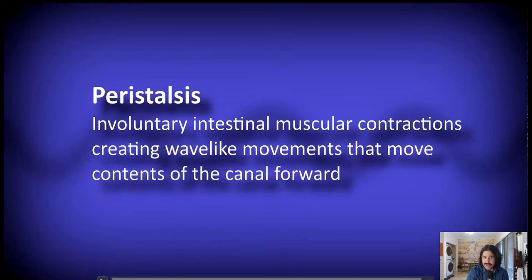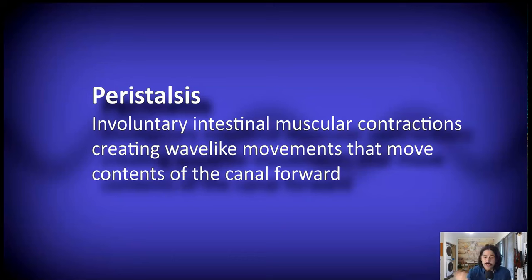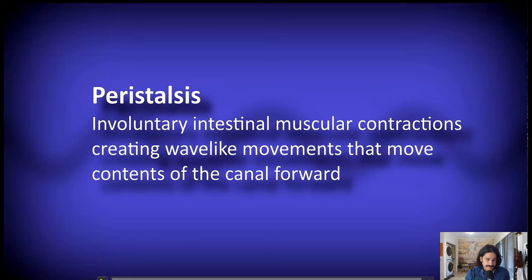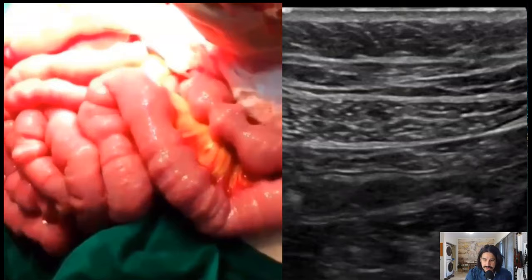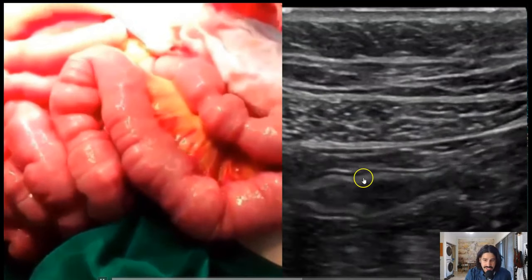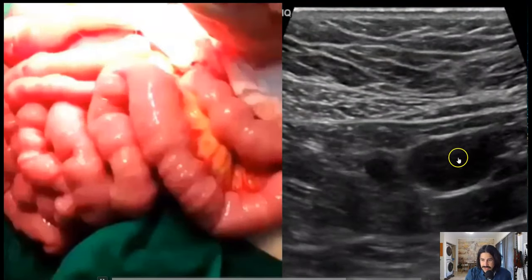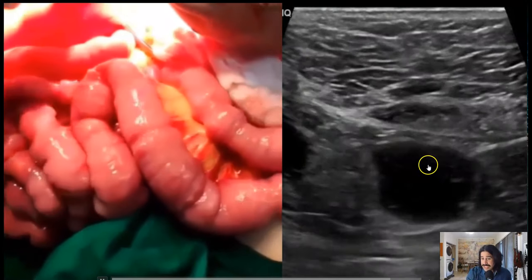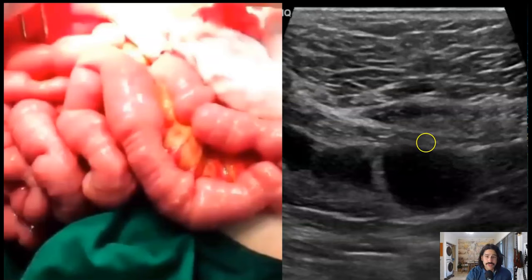Peristalsis is an involuntary intestinal muscular contraction controlled by the autonomic nervous system. It creates wave-like movements in the canal of the intestines to propel stomach contents and intestinal contents forward. Oftentimes if you hear your stomach grumbling, that's peristalsis. Here you can see a surgical view of peristalsis and then small bowel peristalsis. This is important to note because if there is ileus or bowel paralysis, or a small bowel obstruction, you're going to have a lack of peristalsis.